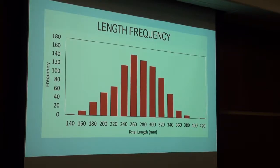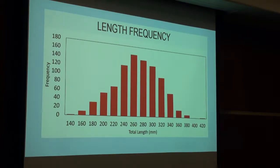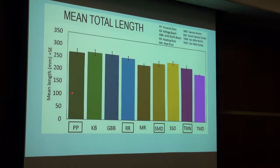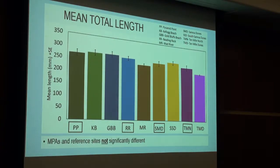Looking at length frequency — how frequently we caught fish of different sizes — the y-axis shows frequency and the x-axis shows total length in millimeters, measured from the snout to the tip of the caudal fin. The size range was 140 to about 420 millimeters, with an average around 260 millimeters, which is about a 10-inch fish. Breaking this down by site over the two years, the mean lengths are all very similar, with hardly any variation — our marine protected areas and reference sites are not significantly different from one another and are very comparable.